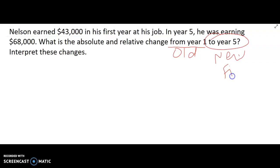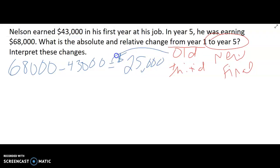Sometimes initial is a little bit easier because initial is where you're starting. Final is where you're ending up. So my final value or my new value is $68,000 and the old value or where I started is $43,000. So my absolute change is $25,000 and it's positive. That means from year one to year five, Nelson had a $25,000 increase in his salary.